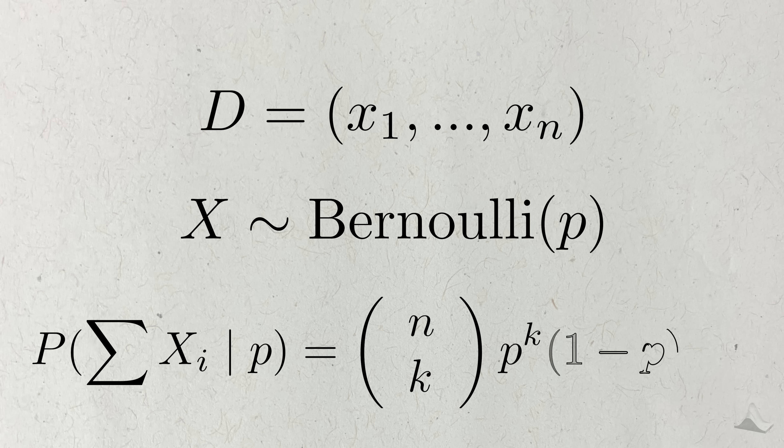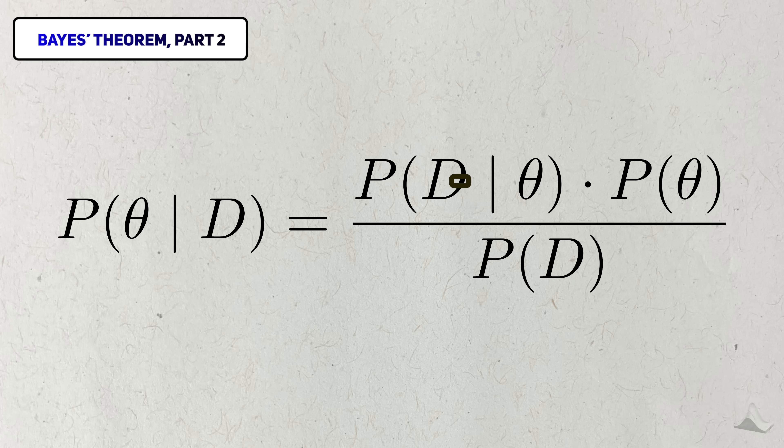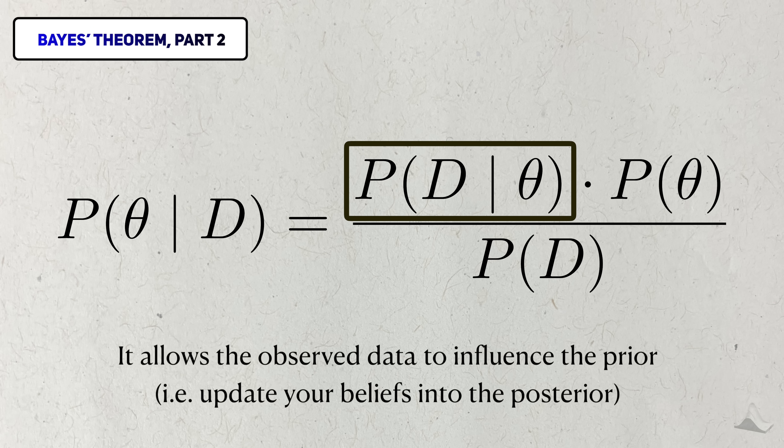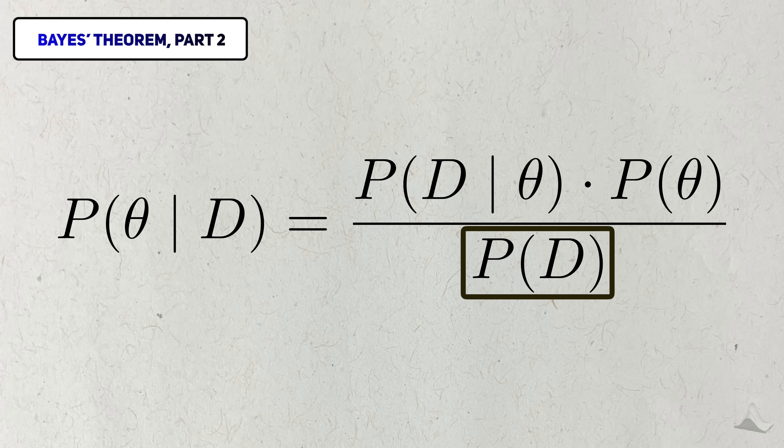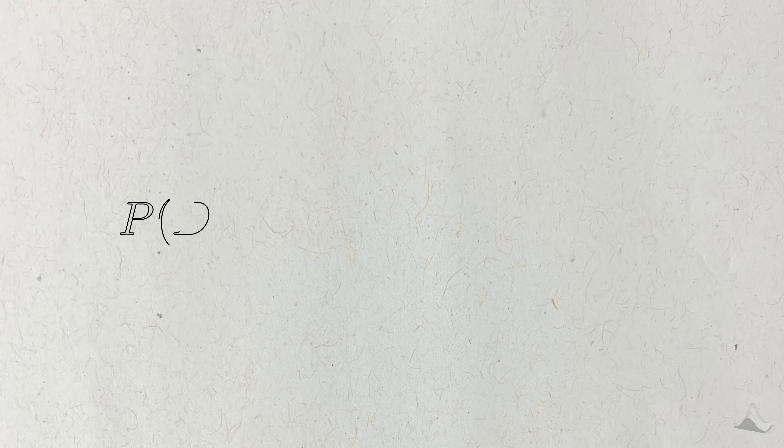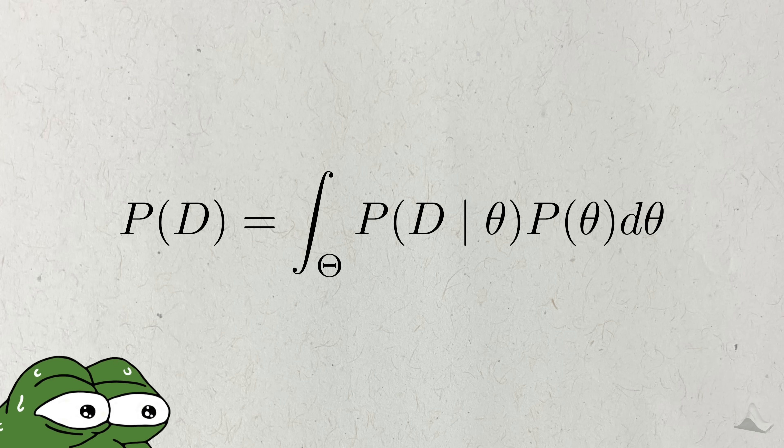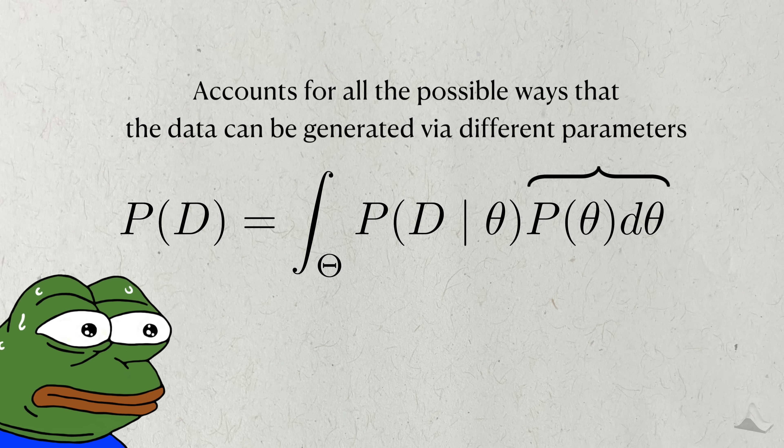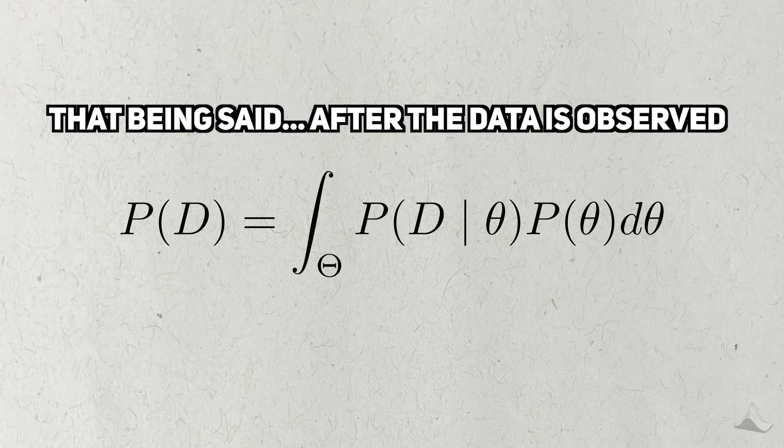From the Bayesian perspective, once you condition on a particular parameter, you can check how likely the data would have come from this particular value. The importance of the likelihood is that it allows the data we observe to influence the shape of the posterior distribution. This term in the denominator represents the marginal probability of observing the data. To get this probability, you have to calculate a difficult integral, integrating over all the possible parameter values. Despite how it looks, after the data is actually observed, this term is just a number.